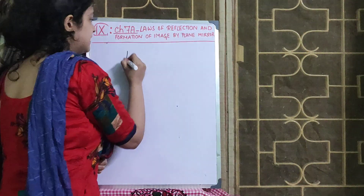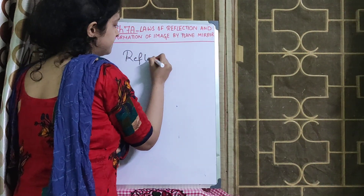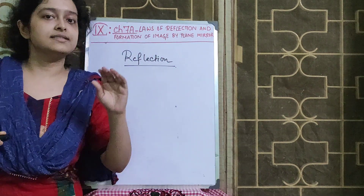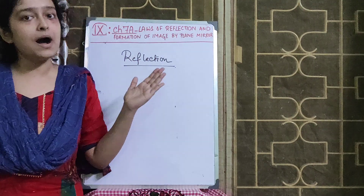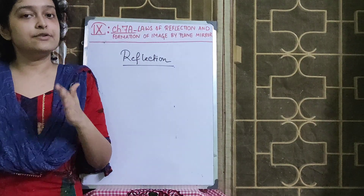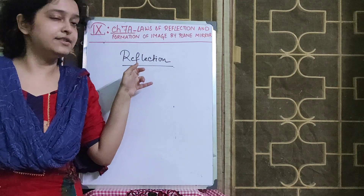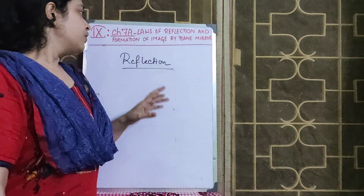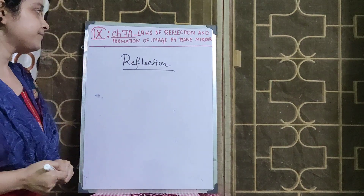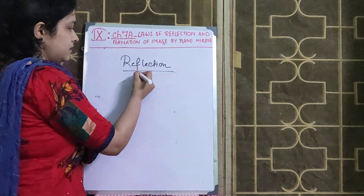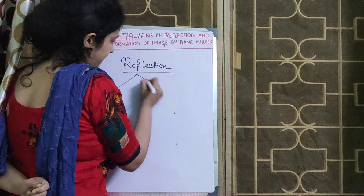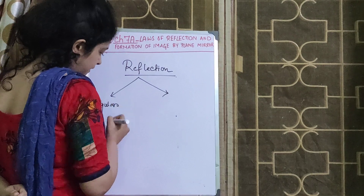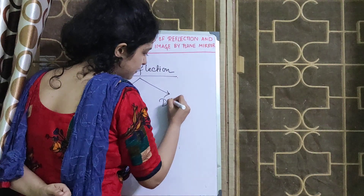Basically, reflection is when light falls on a certain surface and bounces back to the same medium in which the light was initially traveling — that is a reflection of light. Now, for this reflection, you have regular and diffused reflection.